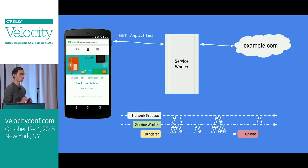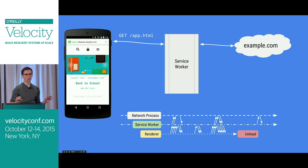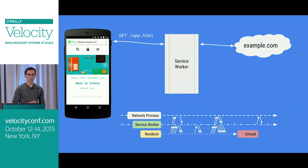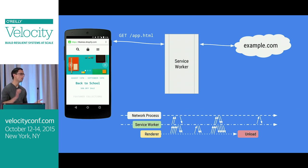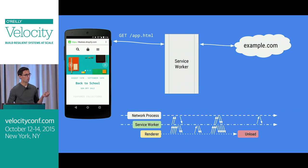With Service Worker, the picture changes — we're injecting another process. It's a standalone process, a worker process if you're familiar with web workers. It runs on a separate thread and is independent of the renderer process, so it doesn't have access to the DOM — you can't do things like find element by ID. But it gives us interesting capabilities: in particular, every request is routed through the Service Worker.